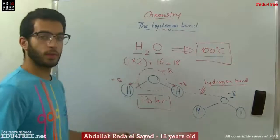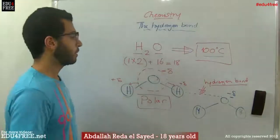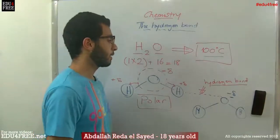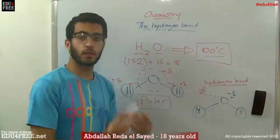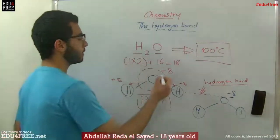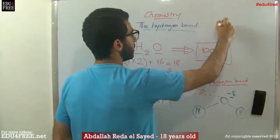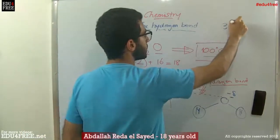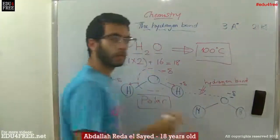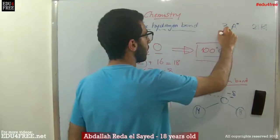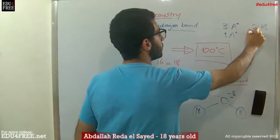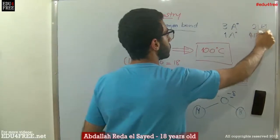There's a very important thing we have to know about hydrogen bonds: they are much weaker than covalent bonds because they are much longer. A hydrogen bond has a length of 3 angstroms and needs 21 kJ to be broken. On the other hand, a covalent bond has a length of about 1 angstrom and needs about 418 kJ to be broken.